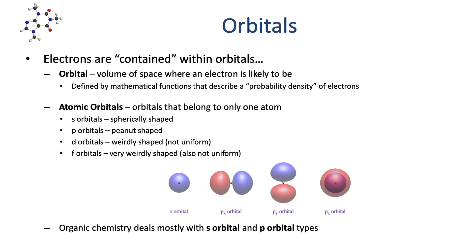Chemistry is really about the interaction of electrons and orbitals, so we're going to spend a good bit of time talking about orbitals. We tend to think of orbitals as containing electrons. An orbital really is nothing more than a volume of space where electrons are likely to be. It's technically defined by rather complex mathematical functions that describe a probability density of electrons — where they are likely to be, and how likely they are to be there.